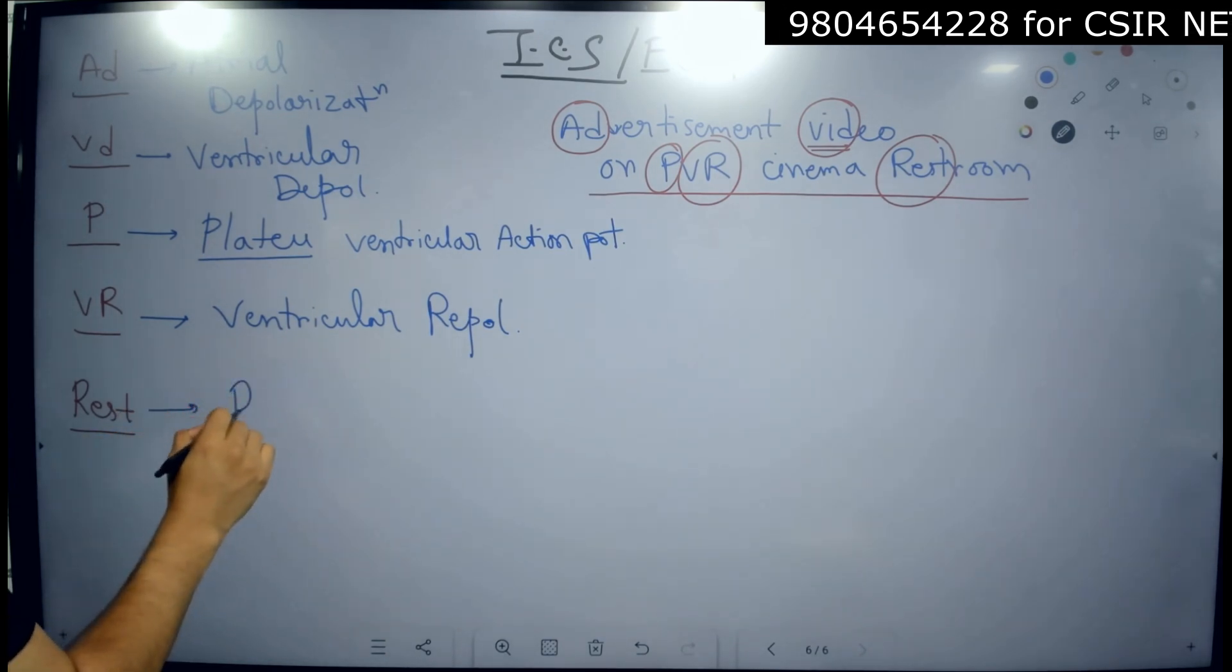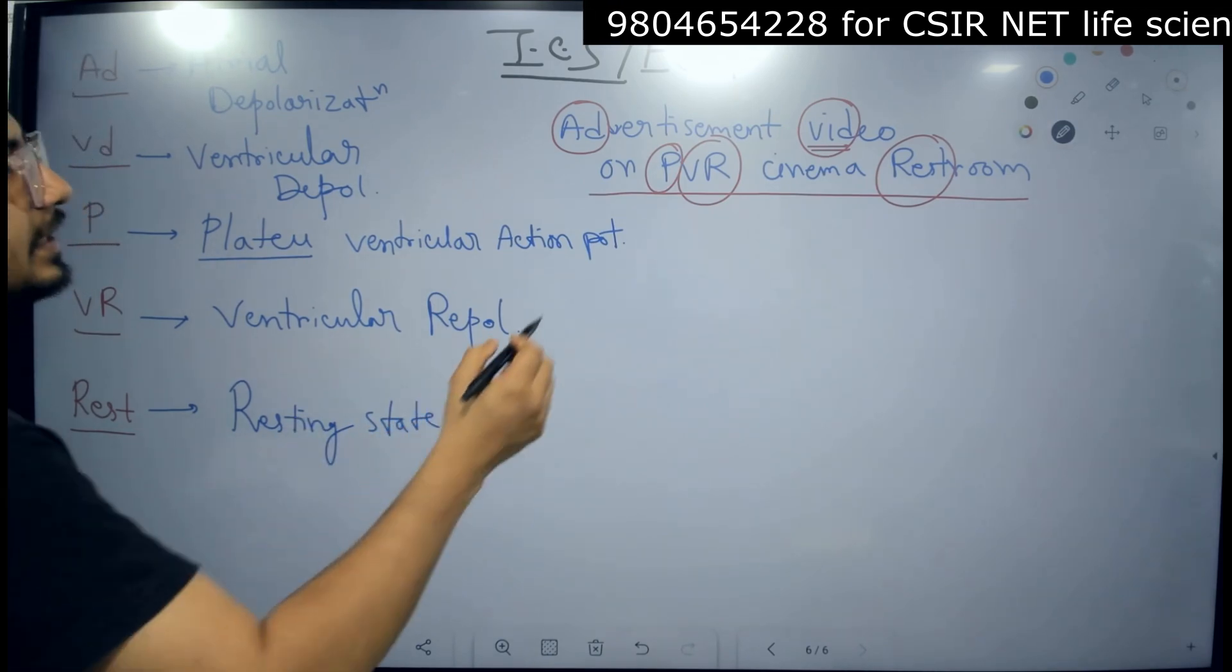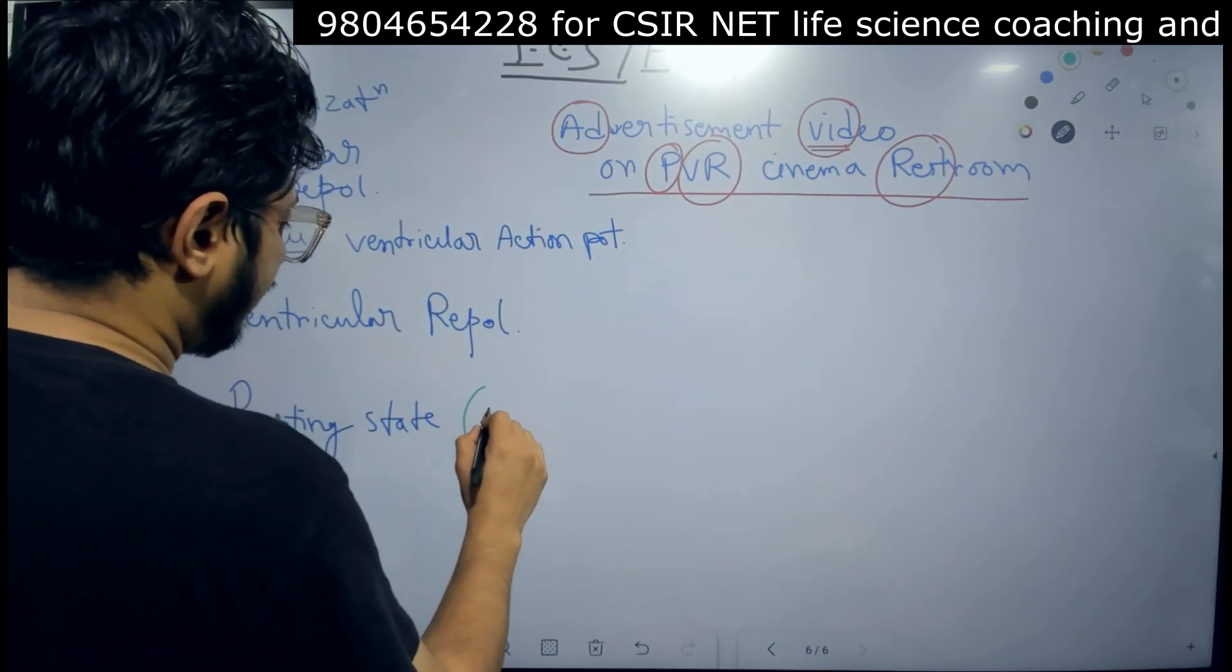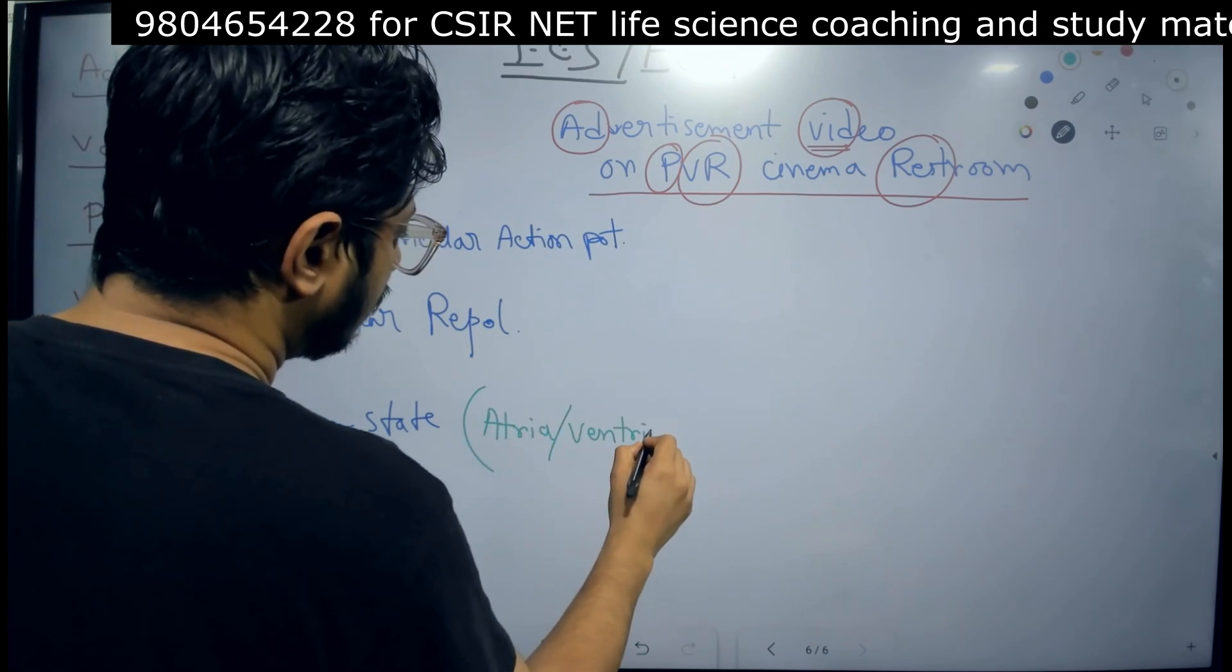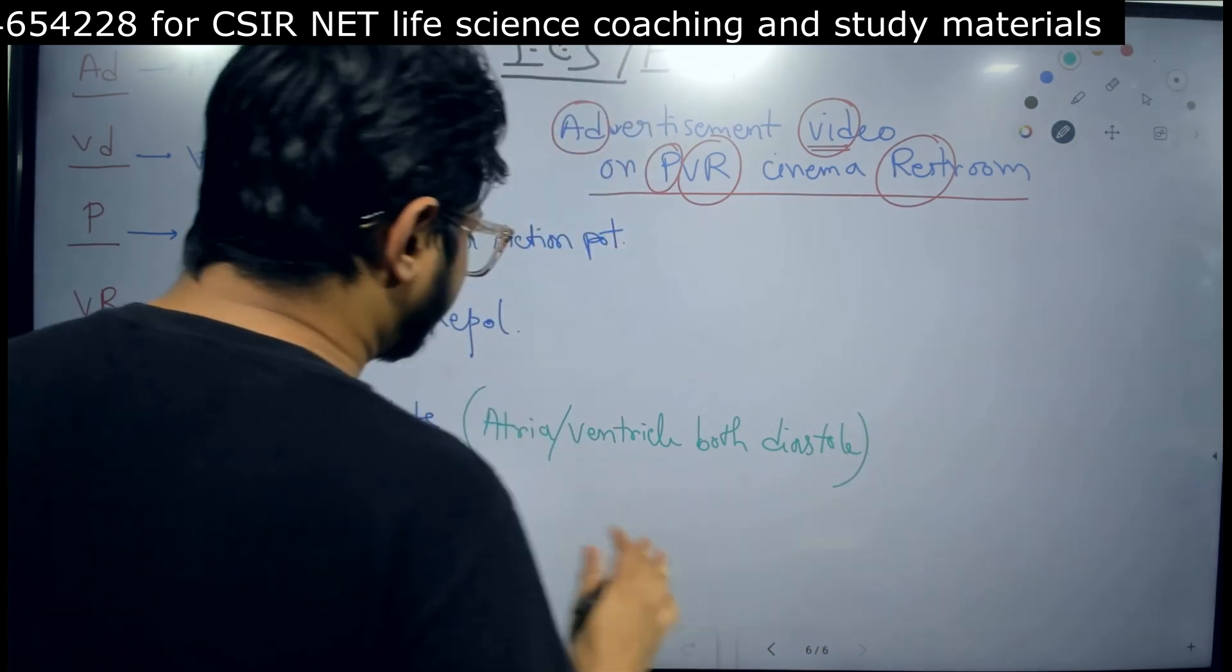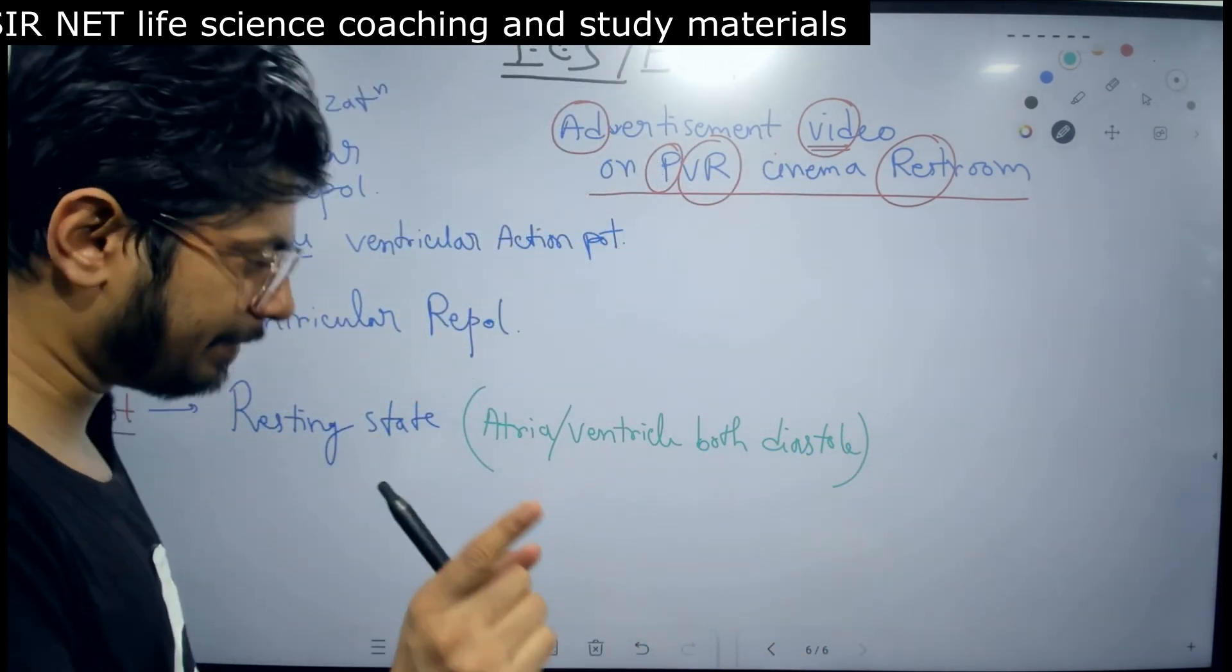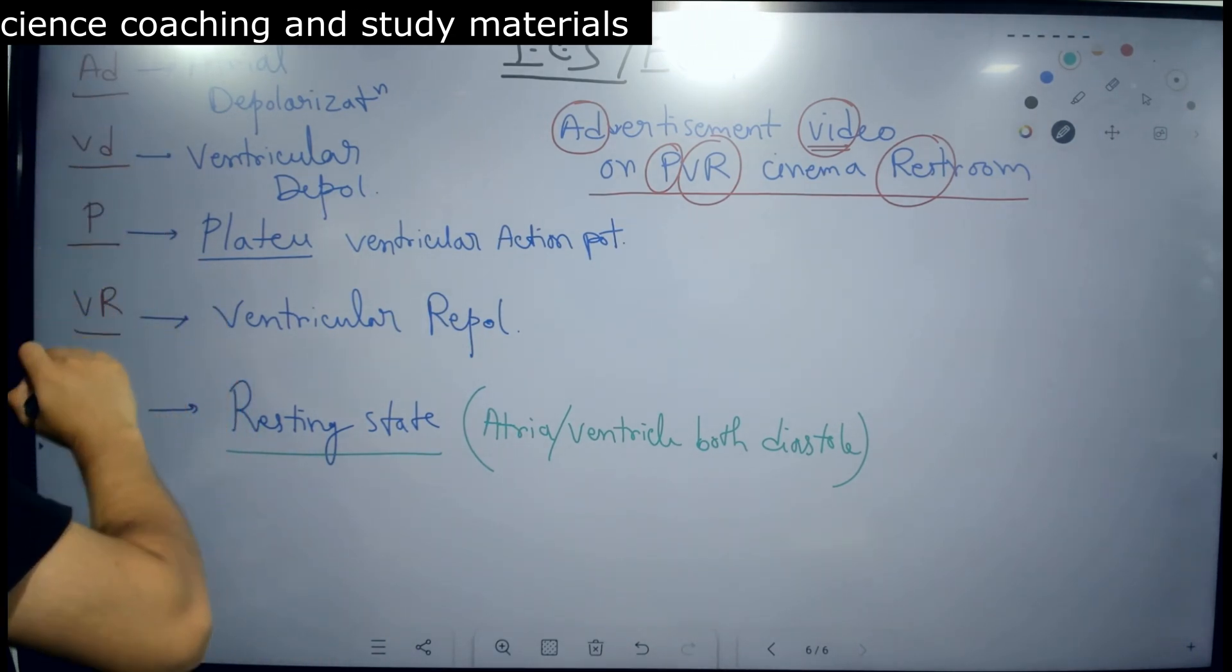And the last one is resting state. Resting state means obviously, what do you mean by resting state? The resting state is when the atria and ventricle both are in diastole. The time that is between the ventricle and atrial diastole, that time frame, that time gap, that is a resting state. That's what we need to understand. So AD, VD, P, VR rest.